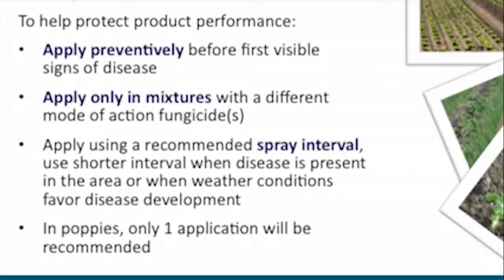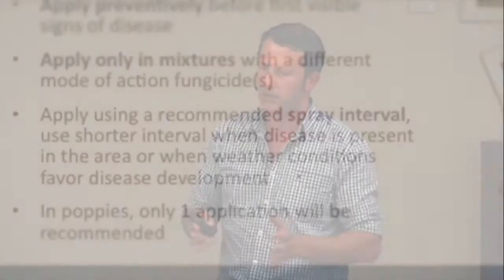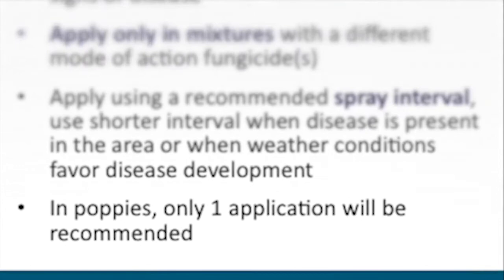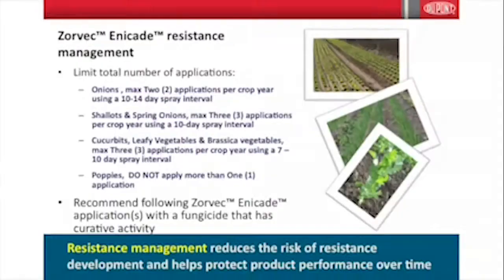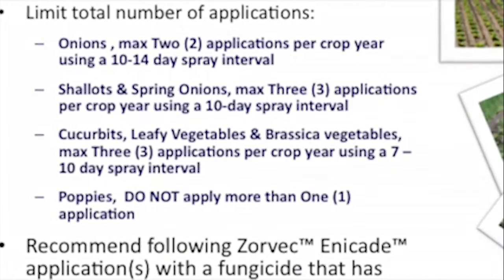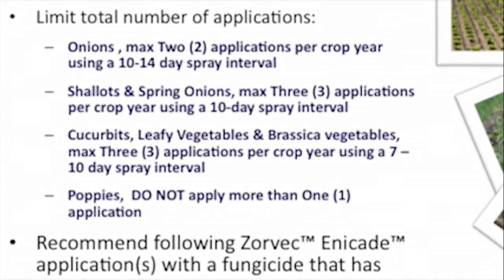The tank mix partner is there not only to potentially aid efficacy but also to have another mode of action and take pressure off this sole chemistry. Spray intervals are somewhat restrictive — some crops have a set 10-day interval, others a 10–14 day window for onions. When disease pressure is high, shorten that window. Poppies, being a longer broadacre-style crop, are limited to a single application to avoid exposing downy mildew populations to the product multiple times.